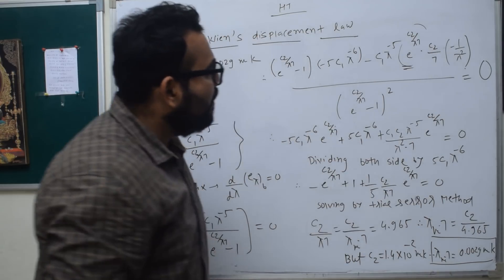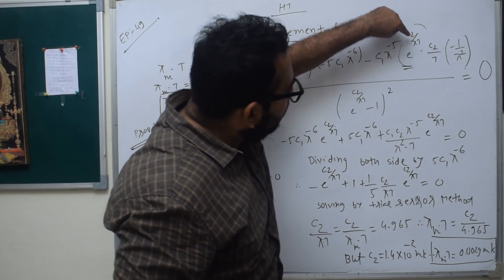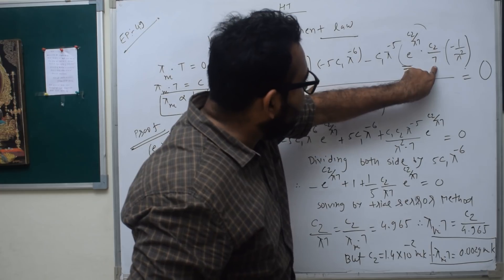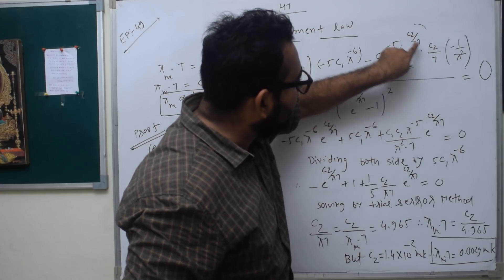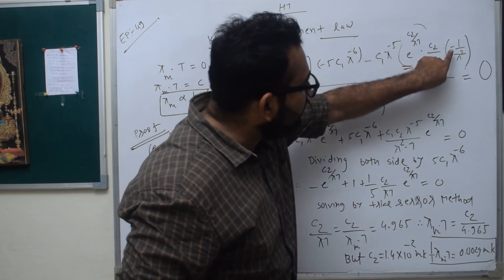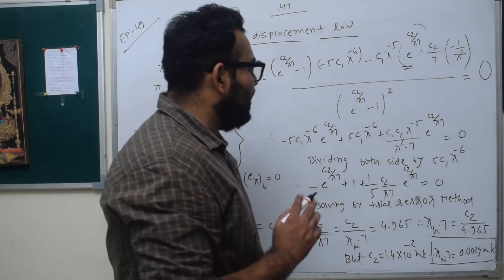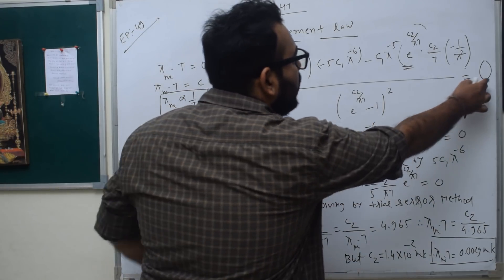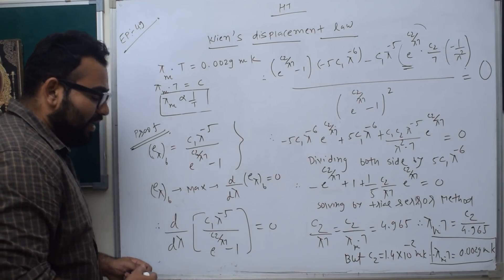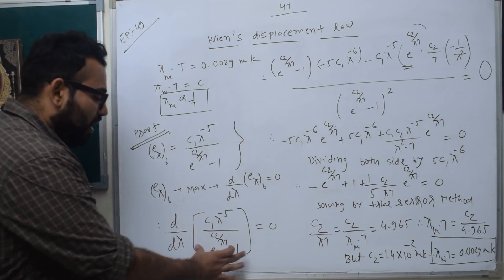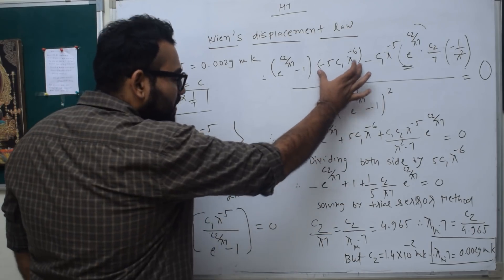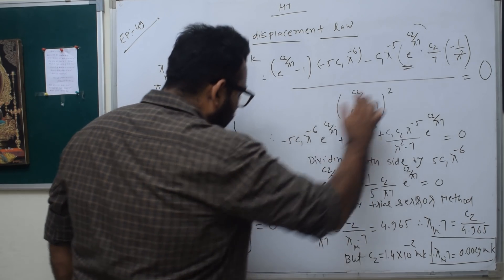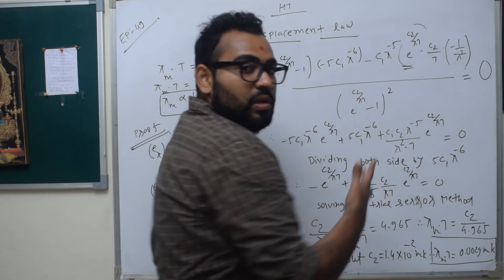Now what we need to do: we go inside the expression, and C2 upon λT differentiation — since C2 upon T is constant — the differentiation of 1 upon λ gives minus 1 upon λ squared. Then the denominator squared equals zero. We have applied the quotient rule: denominator as it is, numerator differentiation minus numerator as it is, denominator differentiation, upon denominator squared equals zero.